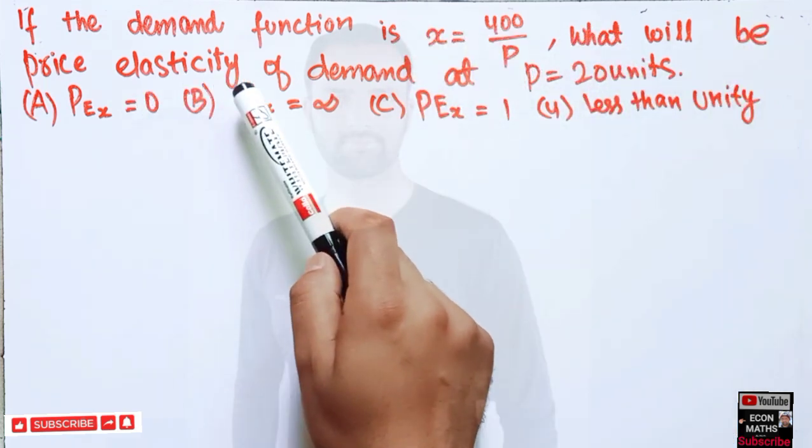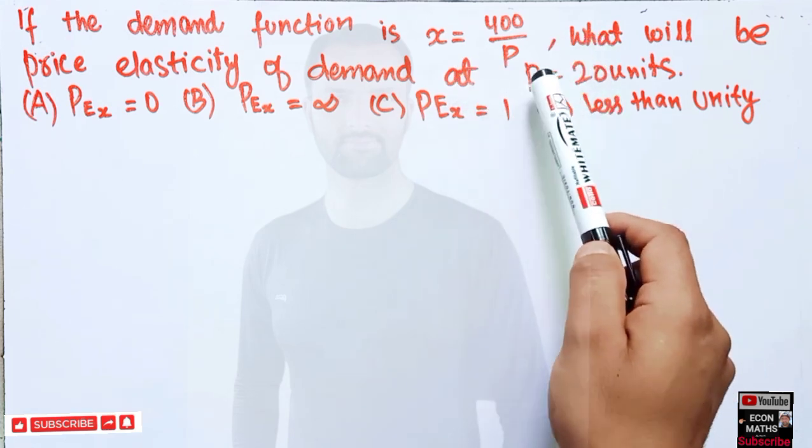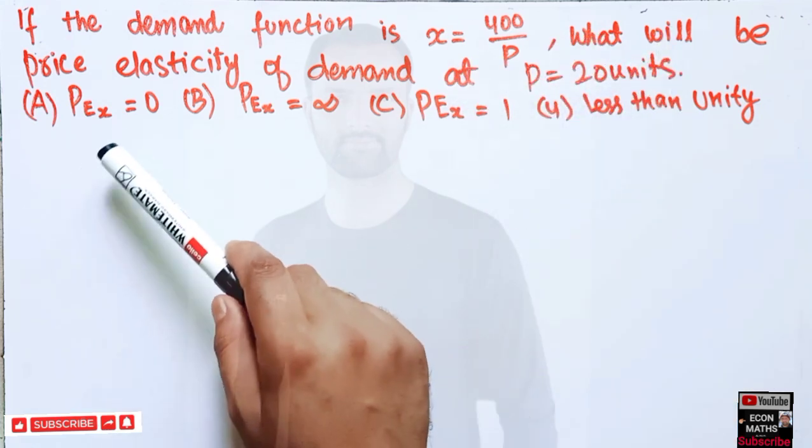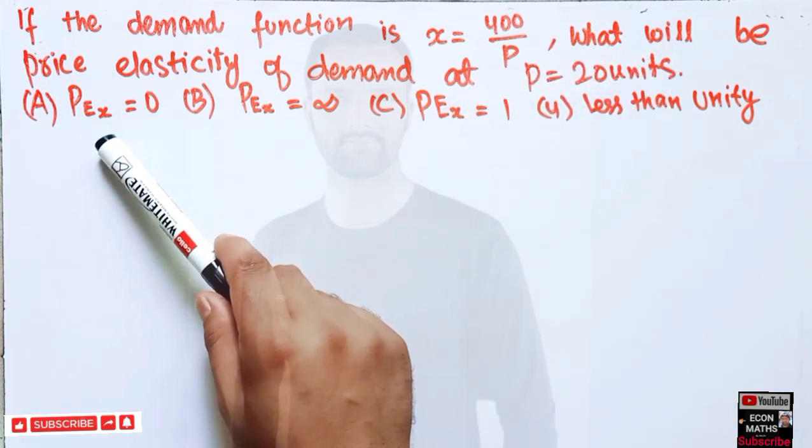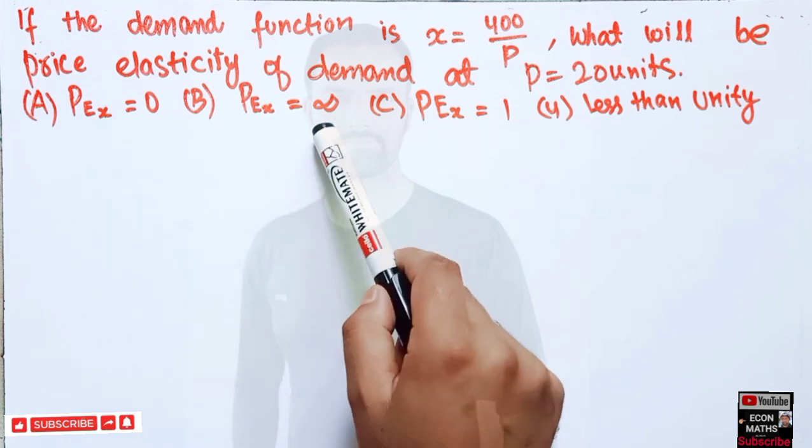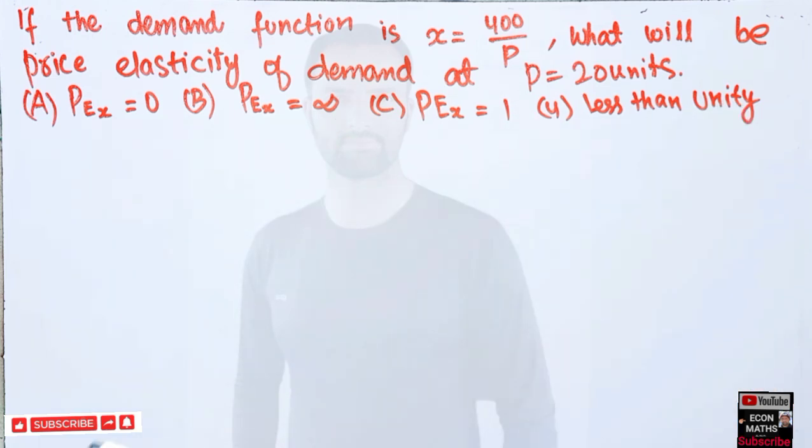What will be price elasticity of demand when price is equal to 20 units? The options are: price elasticity of demand will be 0, infinity, unity, or less than unity.